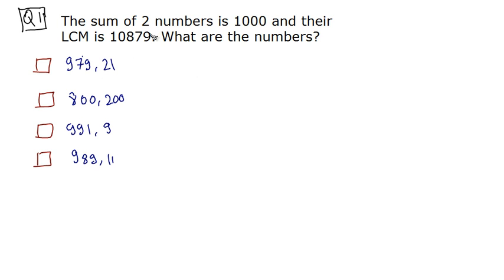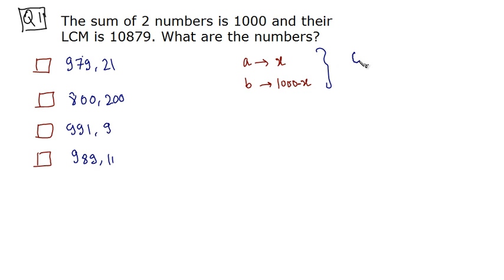You have been given the sum of two numbers. Let's say these two numbers are A and B. If we consider A to be X, then B would be 1000 minus X because the sum is 1000. Let us consider these two numbers as co-prime. If two numbers are co-prime, we can write their LCM as their product. So LCM is equal to A cross B.